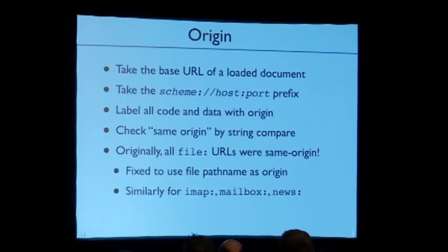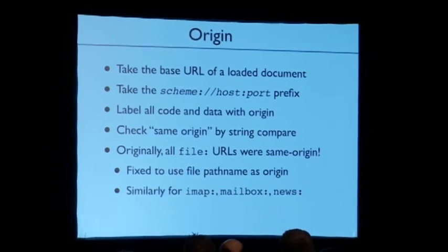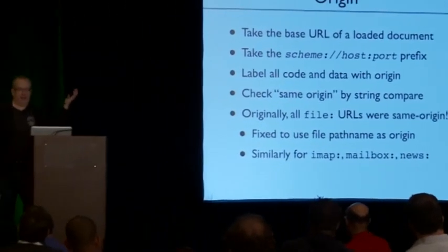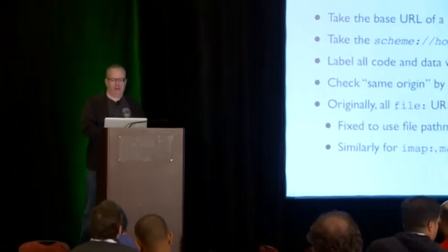And code, when it's compiled, has the origin of the document that was loaded from, the script tag was embedded in, copied into the compiled code. So you can make these sort of access control judgments based on the subject and the object, the running code and the data that it's looking at. And it's done based on this origin substring of the URL, and it's based on a string compare. There were lots of bugs.